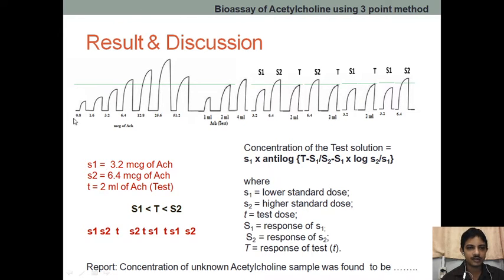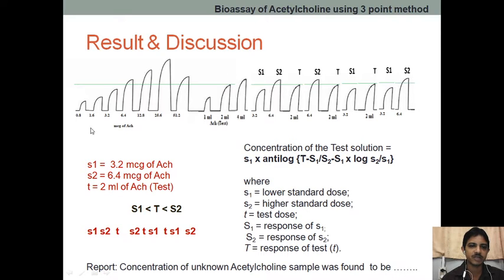Now, this is the CRC of acetylcholine — which we have already seen — and this is the CRC of the test. We have selected three responses: two responses from the standard CRC and one response from the test. How have we selected them?